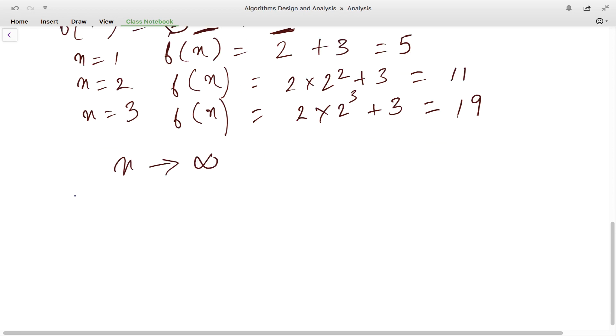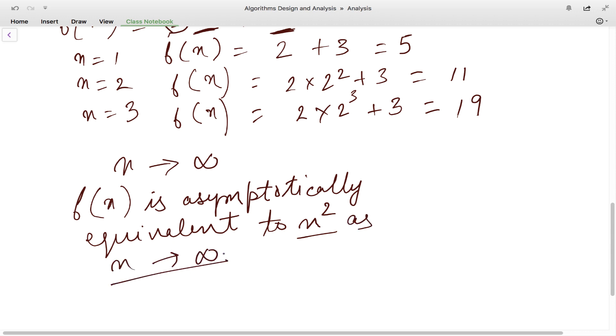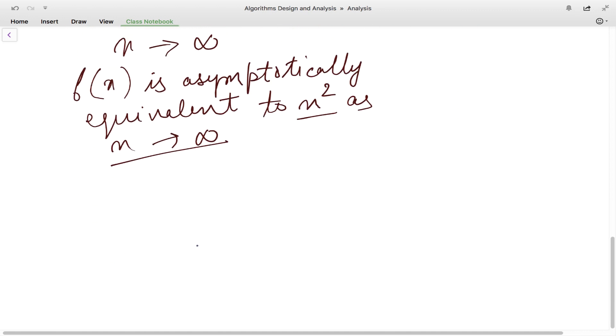And we can say here for this particular function that f(n) is asymptotically equivalent to n square as n tends towards infinity. So there is a way to define these asymptotic analysis. We have different notations, so let us go through these notations.